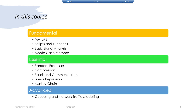These are the topics we will cover. I have divided this course into three broader units. The first unit covers fundamentals: that includes MATLAB basics — basic programming, data types, scripts, and functions. Since communication systems are all about signals, we will do some basic signal analysis, revisiting Fourier series, Fourier transform, and the Fast Fourier Transform.